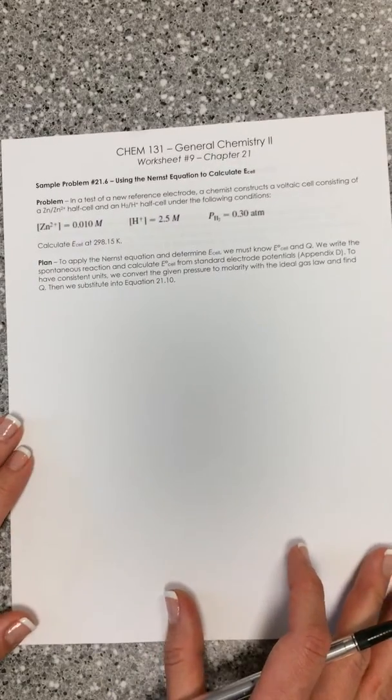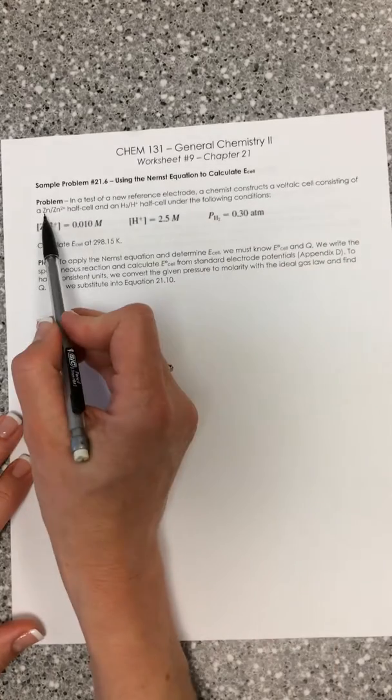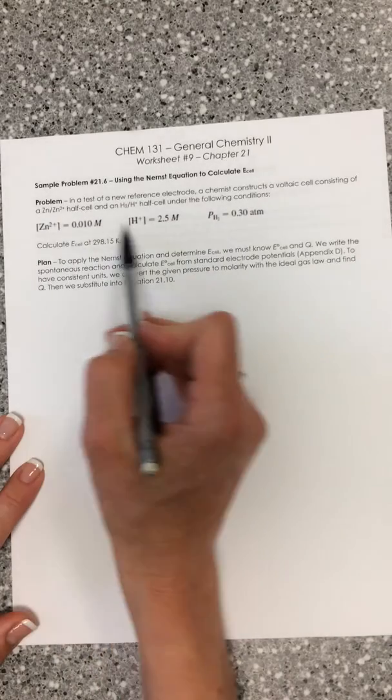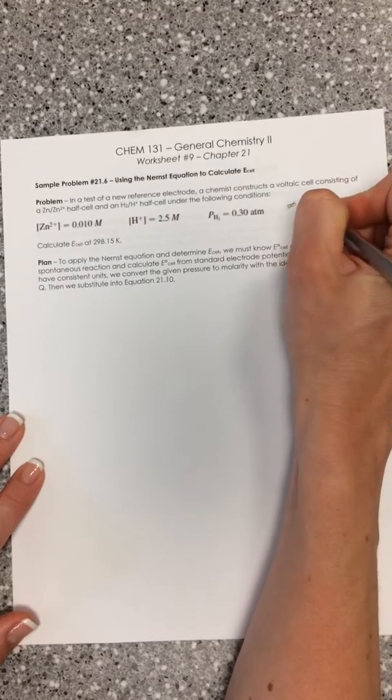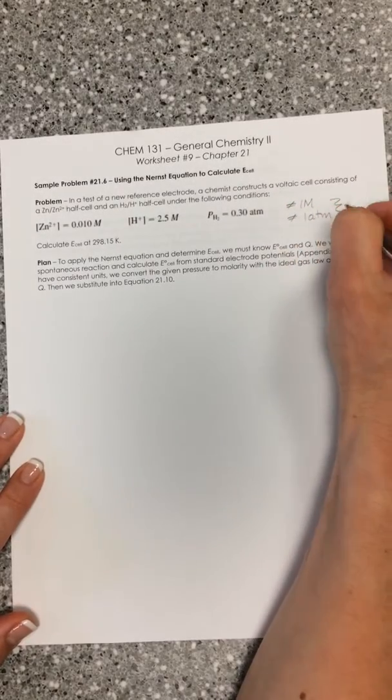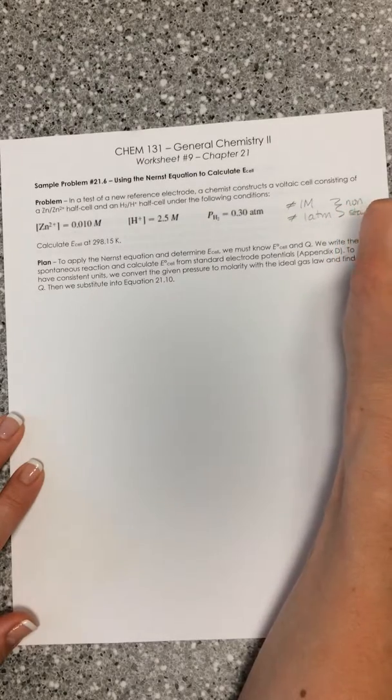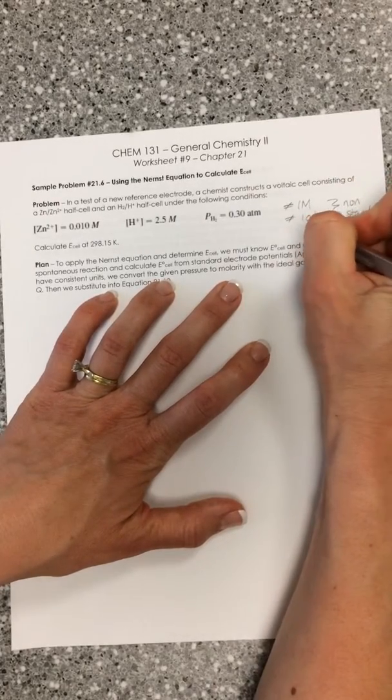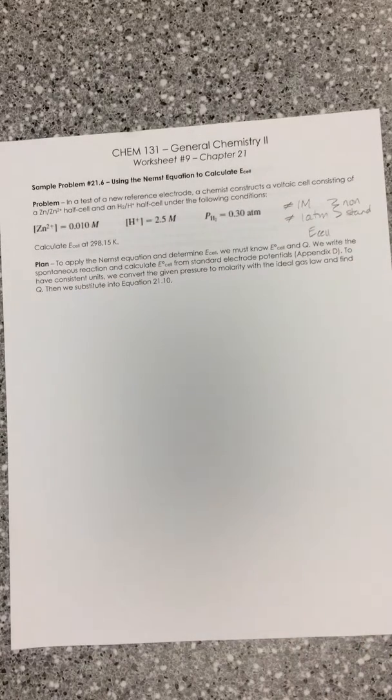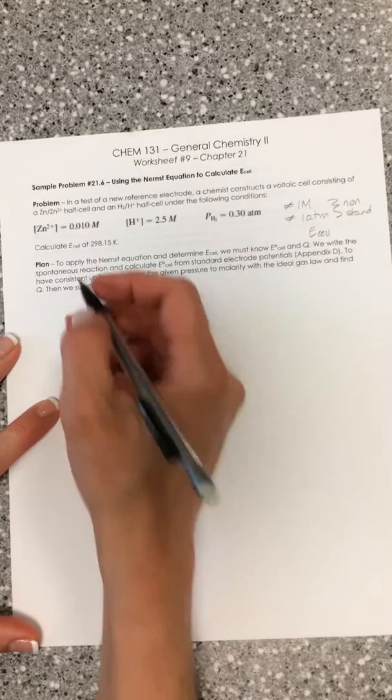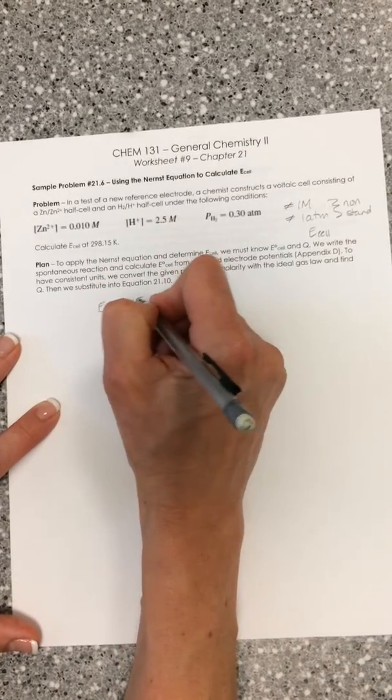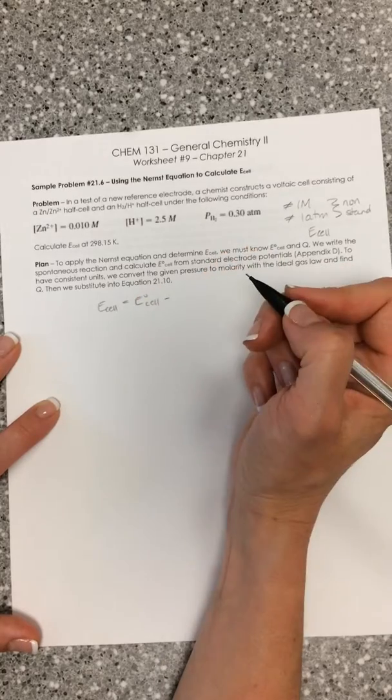In this problem they tell us we have a new reference electrode. We're going to make a voltaic cell that has a zinc and hydrogen half cell situation. They give us concentrations of things, and we can see these concentrations are not one molar and they're not one atmosphere. So we are at non-standard conditions, which means we are looking at E cell, not E naught.